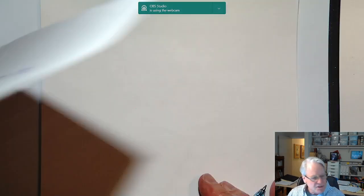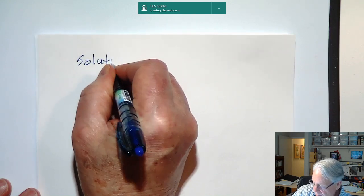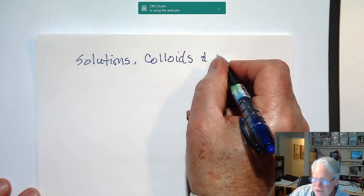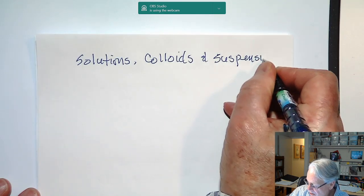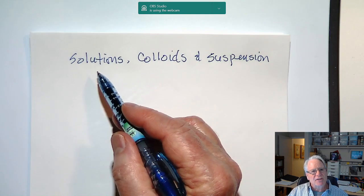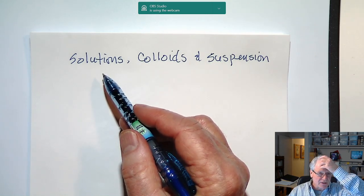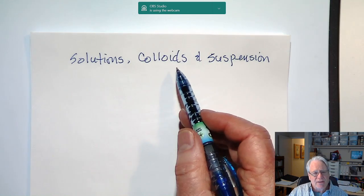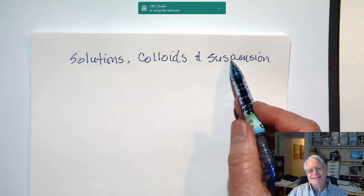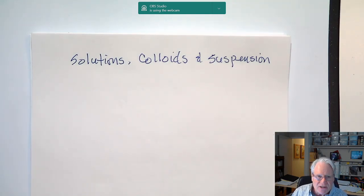Now let's change the subject slightly and talk about solutions, colloids, and suspensions. Of these three types of mixtures, the most common we'll discuss in this course and in 40B and 40C are solutions. We do have examples of colloids in the body, and at least one example of a suspension in the body, though that's not very common.